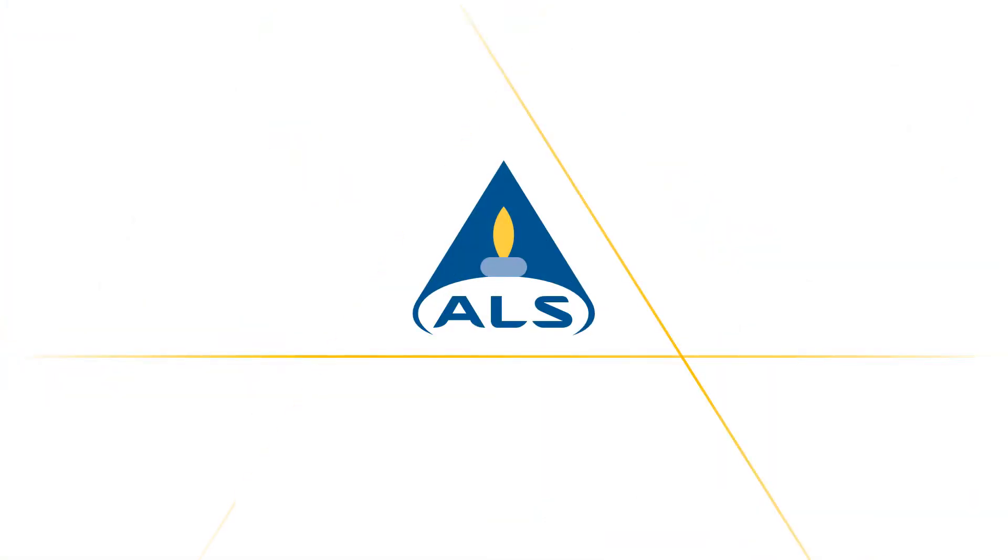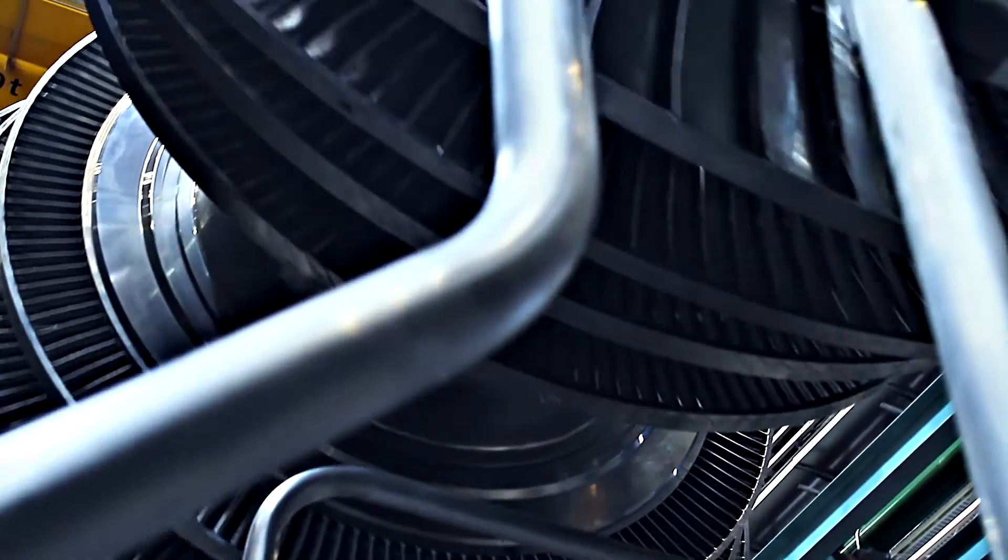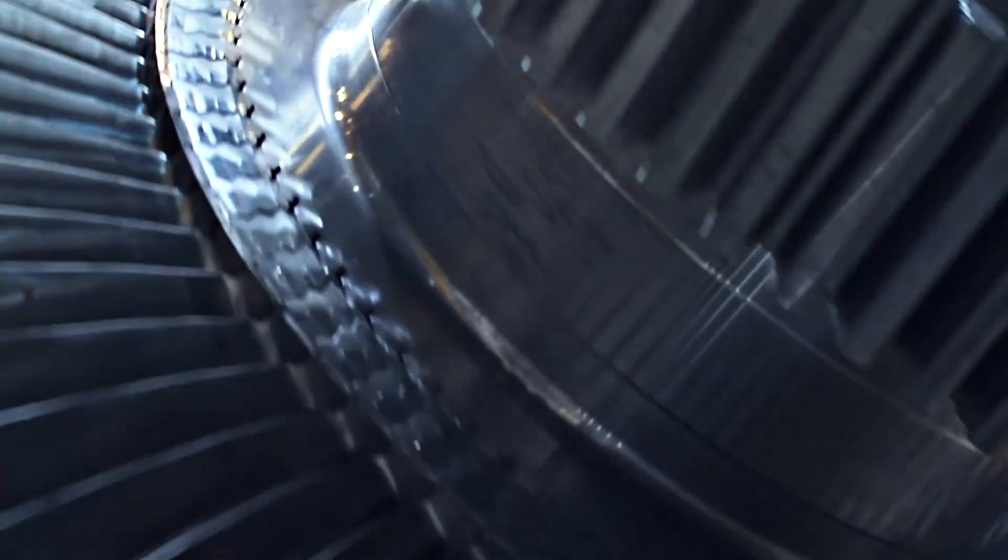Turbine oil performs several tasks within the circulating system: lubrication of bearings and gears, cooling of lubricated parts, hydraulic power medium for governors and control valves, and safety devices.